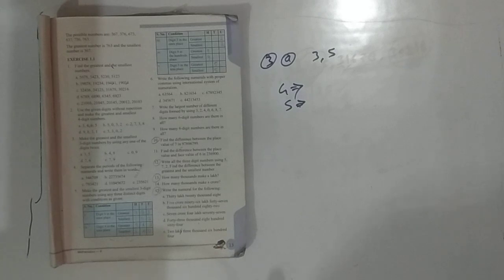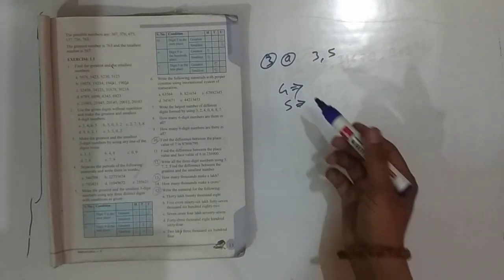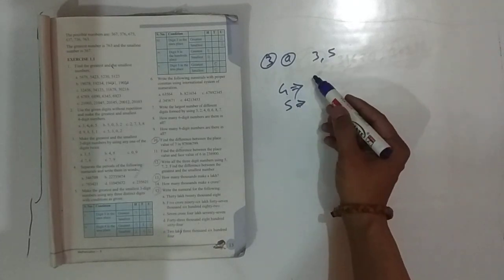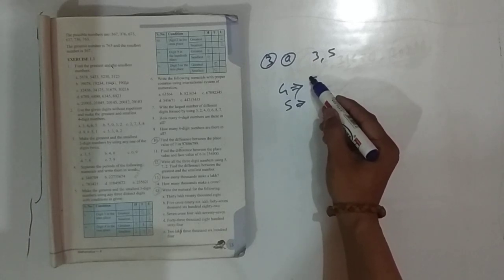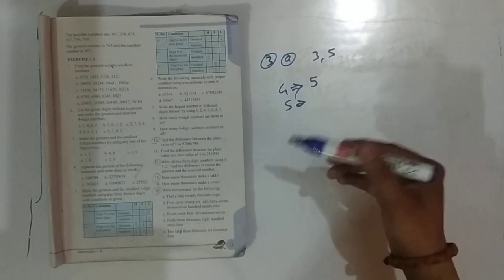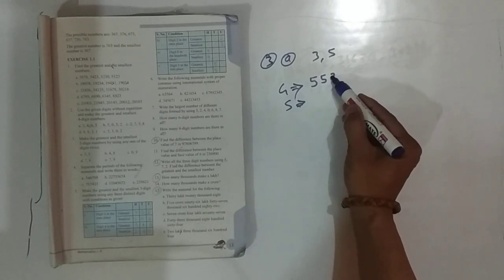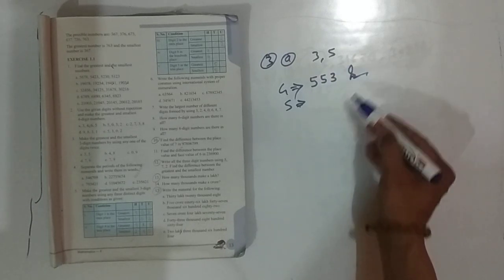Make the greatest number and the smallest numbers. So you can see the greatest number you have given is 5. You have to make this 2 times, right? 5, 5, and then 3. That is the answer for the greatest number.